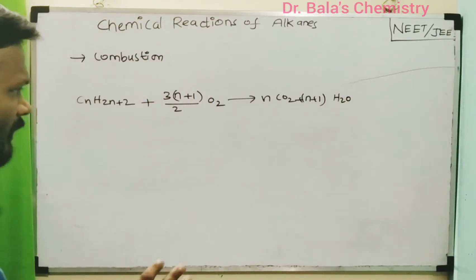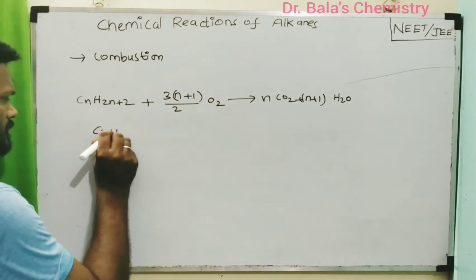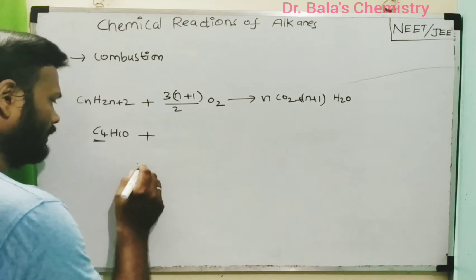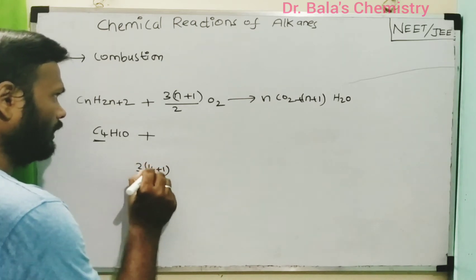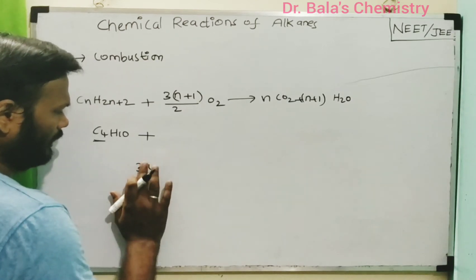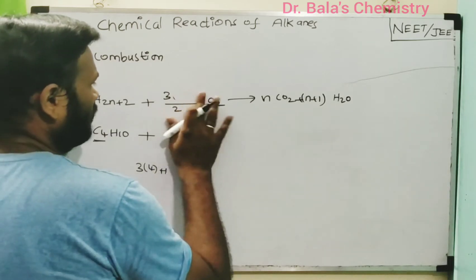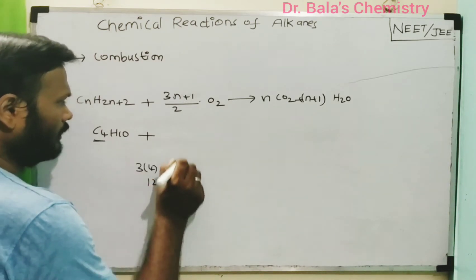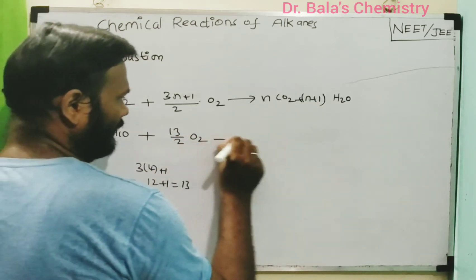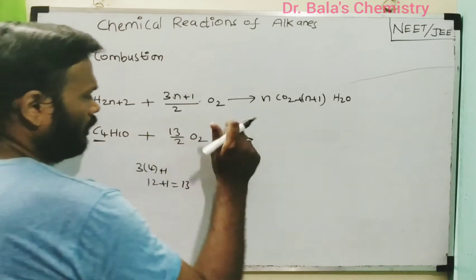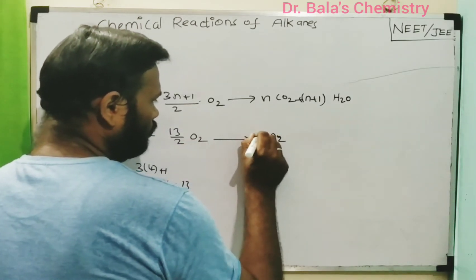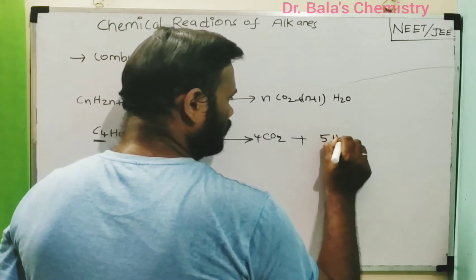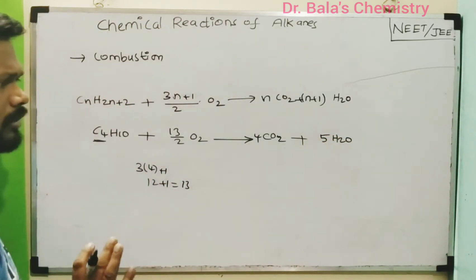For example, this formula is very simple. Take C4H10. If you want oxygen, use 3n+1 where n=4: 3×4+1 = 13, so 13/2 amount of oxygen is supplied. The number of CO2 molecules is n=4, so 4 moles of CO2. And n+1 = 5 moles of water. That's the product. These are very simple reactions.